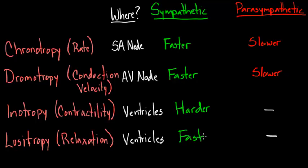These are the quick and dirty overview of these four words. You may or may not hear these words, but at least you're familiar with them. Chrono, Dromo, Ino, and Lusi—these four words describe the major functions of the sympathetic and parasympathetic nerves on the heart.